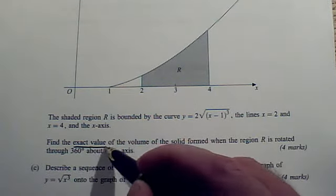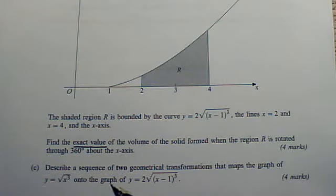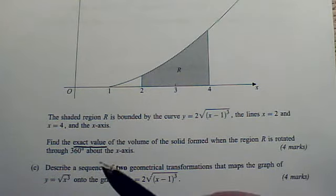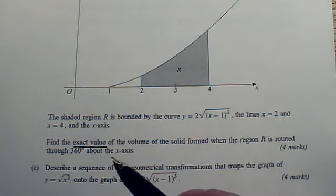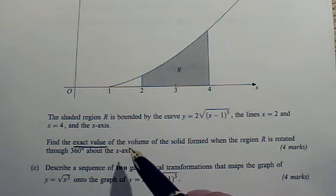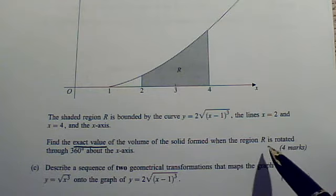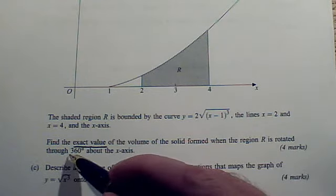That means the answer's got to be given using square roots or e's or logs or pi's or something. But you must not give a decimal answer. You find the exact value of the volume of revolution when R is rotated through 360 degrees.